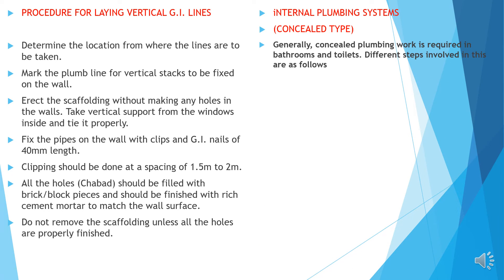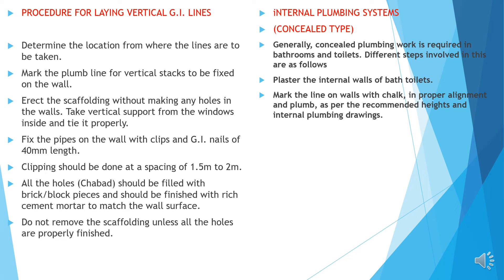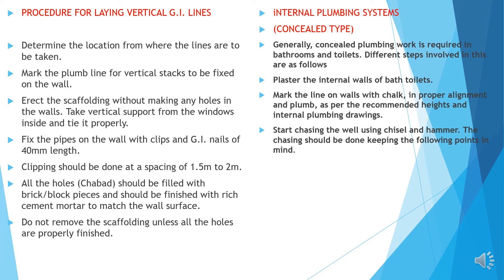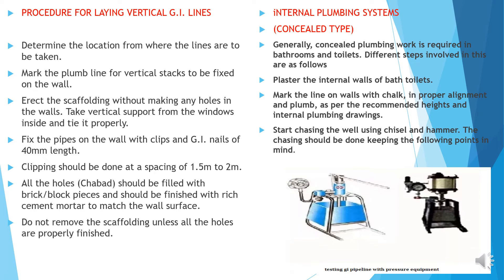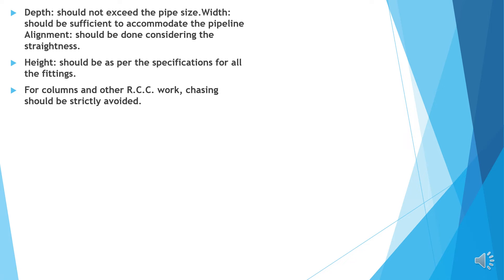Internal plumbing system — concealed type. Generally concealed plumbing is required in bathrooms and toilets. Different steps involved: plaster the interior of both toilets. Make lines on walls with chalk in proper alignment and plumb as per recommended heights and internal plumbing drawings. Start chasing the wall using a chisel and hammer. The chasing should be done keeping the following points in mind. Depth should not exceed the pipe size but should be sufficient to accommodate the pipeline. Alignment should be done considering the straightness. Height should be as per specifications. For columns and other structural members, chasing should be strictly avoided.